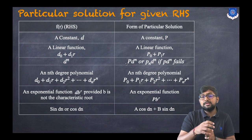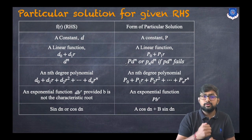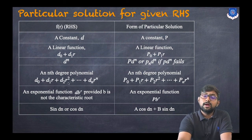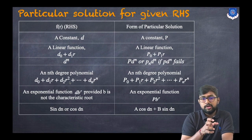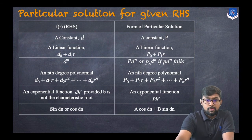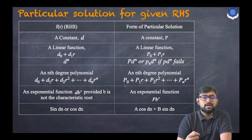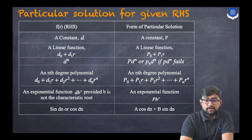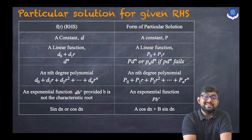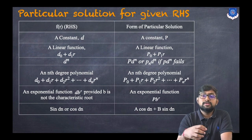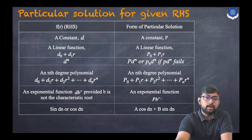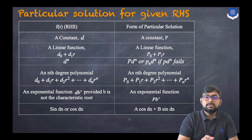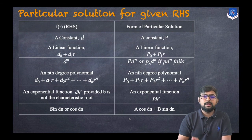Fourth case, if it is an nth-degree polynomial of the form d0 + d1·r + d2·r² up to dn·r^n, we select a polynomial p0 + p1·r + p2·r² up to pn·r^n. Fifth, if we have an exponential function d·b^r where b is not a characteristic root, we select p·b^r. Sixth, if the right-hand side is sine or cosine — sin(dn) or cos(dn) — we select a·cos(dn) plus b·sin(dn).